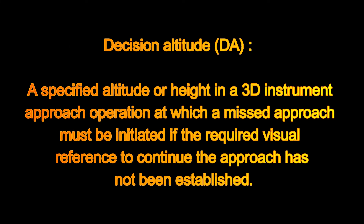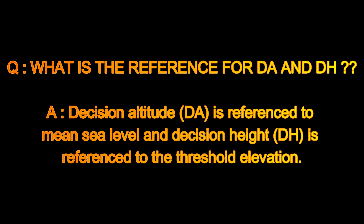DA is a specified altitude in a 3D instrument approach operation at which a missed approach must be initiated if the required visual reference to continue the approach has not been established. What is the reference for DA and DH? The Decision Altitude is referenced to mean sea level, and the Decision Height is referenced to the threshold elevation.